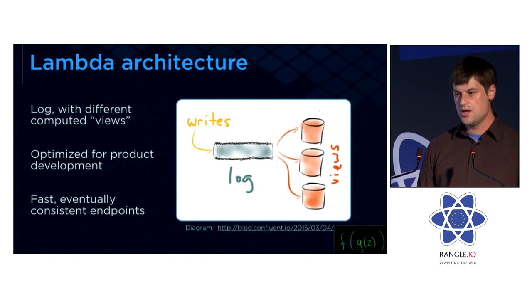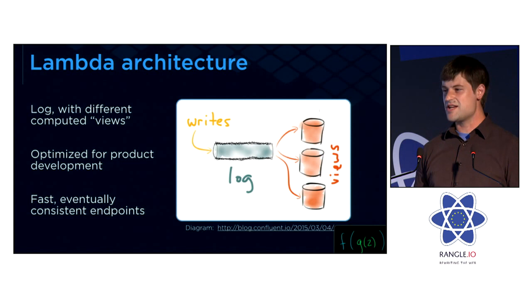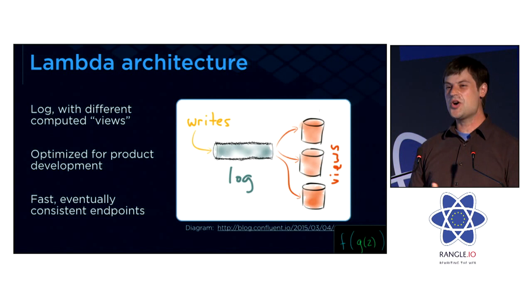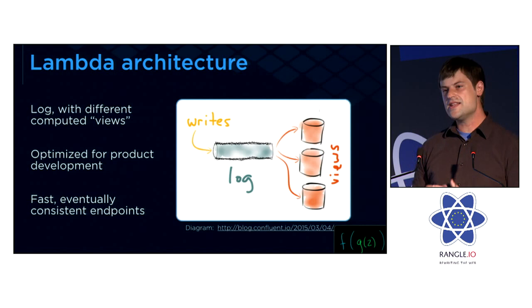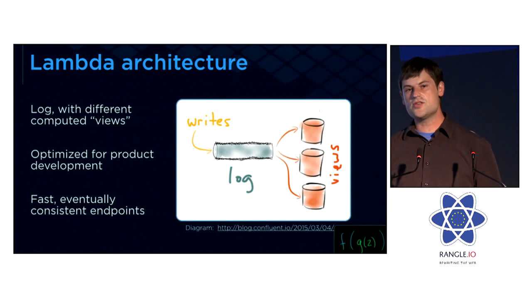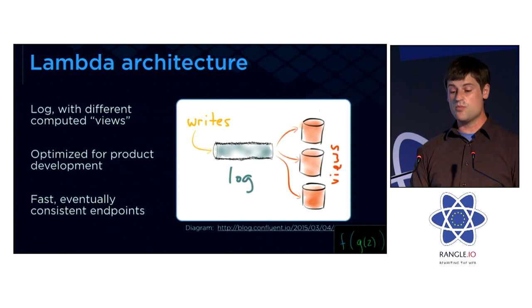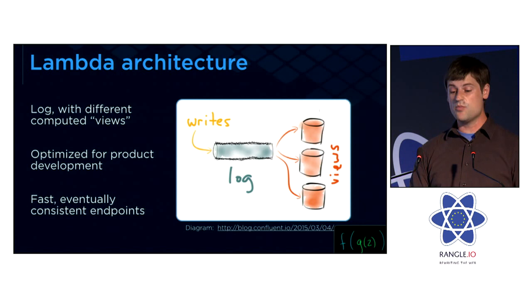In terms of how we've approached this, the backend systems are basically designed around a Lambda architecture. The core idea is that as events come into the system, we record them immutably into a log. Then separately from that log, we can compute different views of the data depending on what we need. This lets us optimize for product and feature development — making it really fast to create new views of data to serve whatever product feature we want to build.